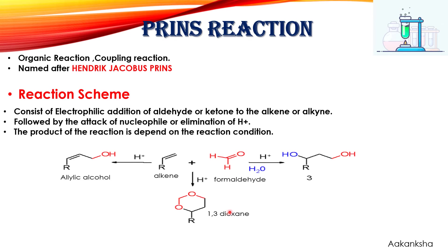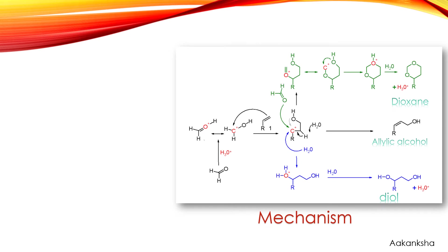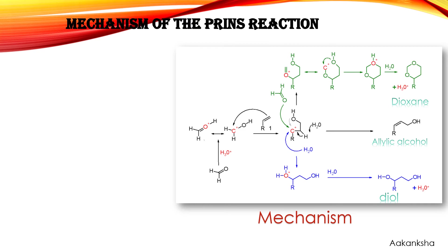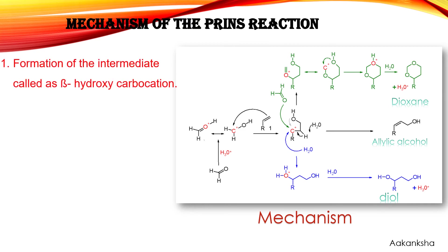Now we will move towards the mechanism of this reaction, which makes it clearer how different products are formed using the same reactants. The first step in the mechanism of the Prince reaction is the formation of the intermediate — that is, a beta-hydroxy carbocation.